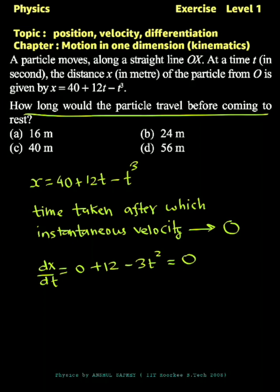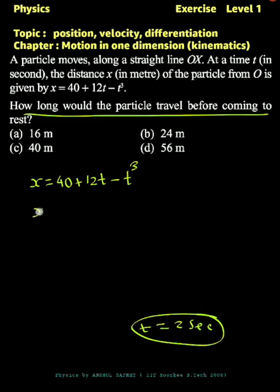Equate it to zero, so we'll get 12 equals 3t squared, or 4 equals t squared, or t equals 2 seconds. Now find out the value of x1 at t equal to zero.